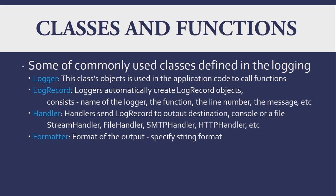There are classes and functions used in Python logging. The commonly used classes are: Logger — its object is used in application code to call logging functions; LogRecord — automatically created objects that contain the logger name, function, line number, message, etc.; Handlers — send log records to output destinations like console or file. Some handlers are StreamHandler, FileHandler, SMTPHandler, and HTTPHandler. There is also a Formatter class that formats the output.